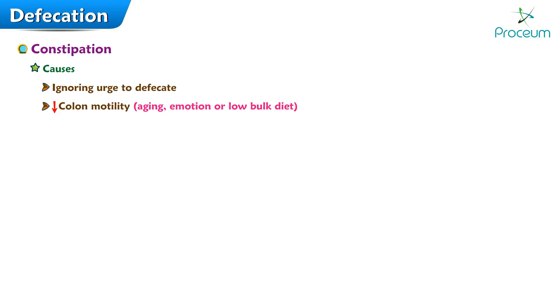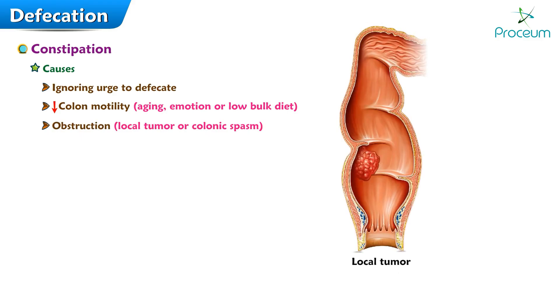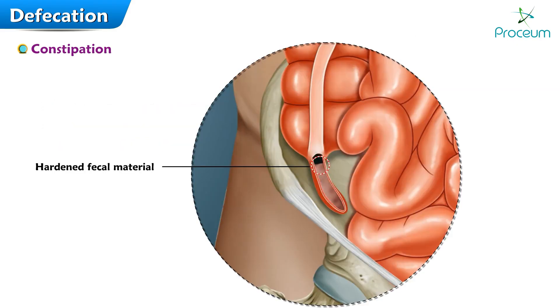Possible causes for delayed defecation that might lead to constipation include ignoring the urge to defecate, decreased colon motility accompanying aging, emotion, or a low-bulk diet, obstruction of fecal movement in the large bowel caused by a large tumor or colonic spasm, and impairment of the defecation reflex. If hardened fecal material becomes lodged in the appendix, it may obstruct normal circulation and mucous secretion in this narrow, blind-ended appendage.